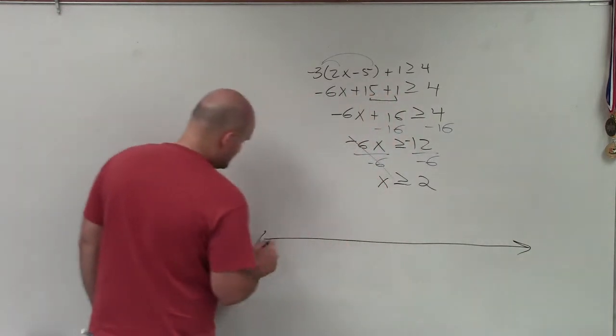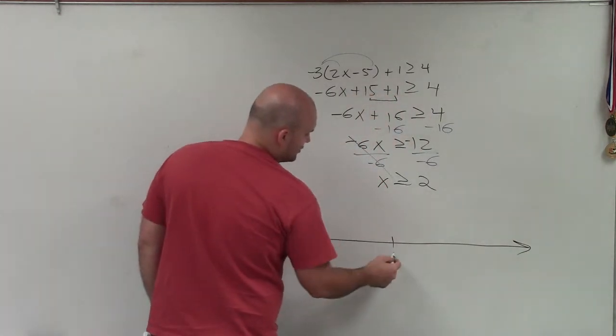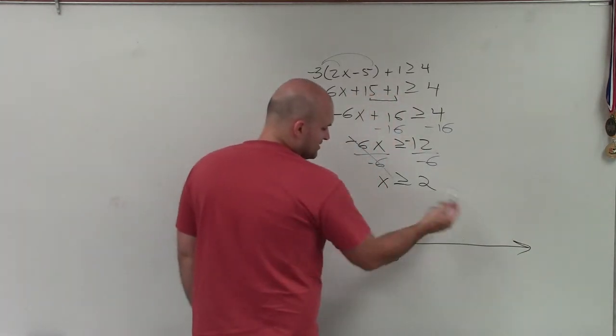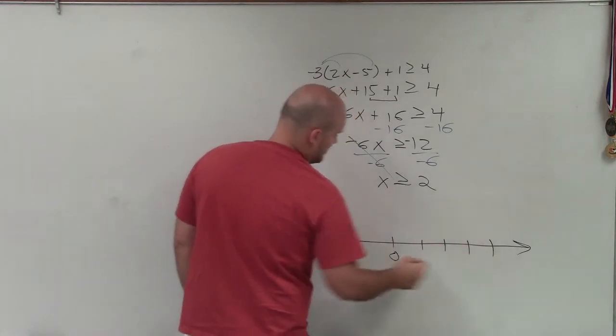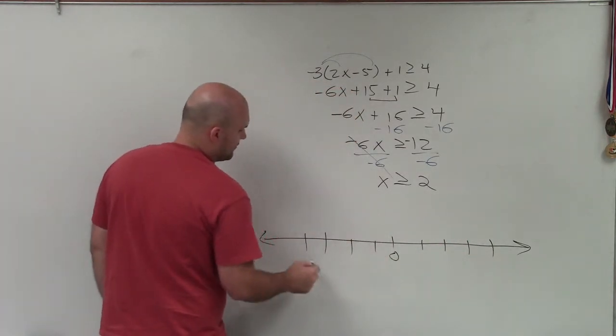So what I'm simply going to do is I'll just create a number line, including 0, because that will be in the same range. So 1, 2, 3, 4, negative 1, 2, 3, 4.